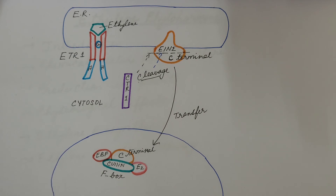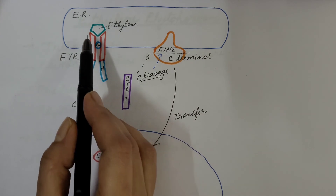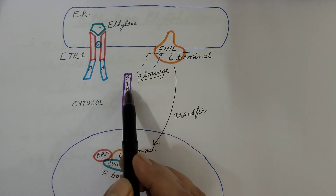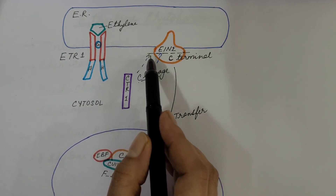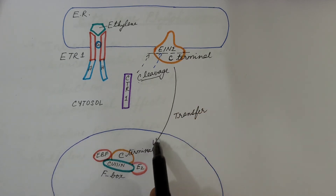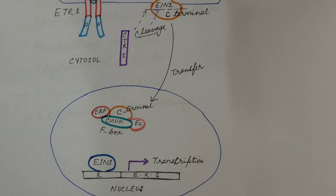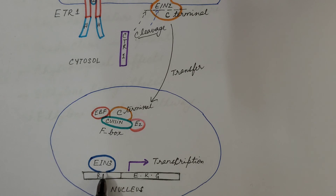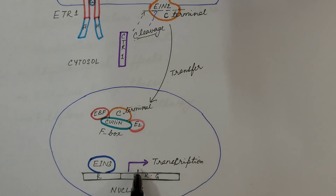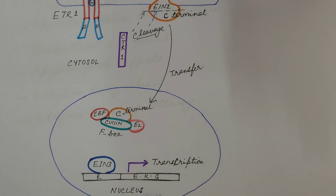Now let us understand this with the help of the diagram. In the presence of ethylene, the plant hormone comes and binds with the receptor, leading to a conformational change in the receptor. As a result, CTR1 does not bind with it, and instead causes cleavage of the C-terminal of EIN2. After cleavage, this C-terminal is transferred to the nucleus and binds with the F-box protein. Now this F-box protein is occupied, so EIN3, which is the transcription factor, does not bind with it. EIN3 is free and comes and binds with the regulatory region of the ethylene response gene, resulting in transcription of the genes and ethylene responses or physiological effects of ethylene in plants.